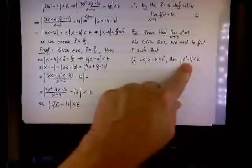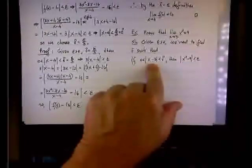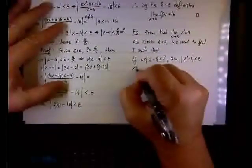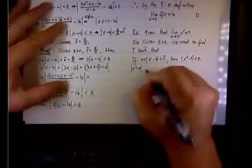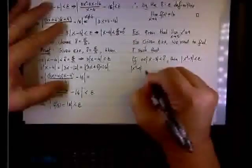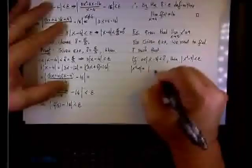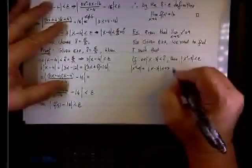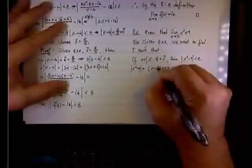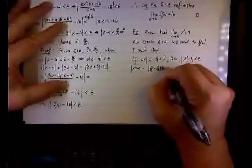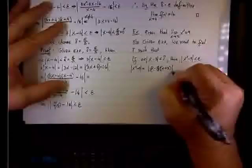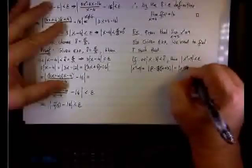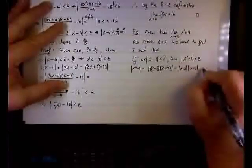The process starts by looking at the right inequality and working back until you get the left inequality. So we start with the absolute value of x squared minus 9 less than epsilon, and we break it down: x squared minus 9 factors as x minus 3 times x plus 3, and we want that product to be less than epsilon.